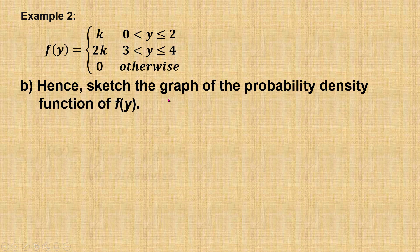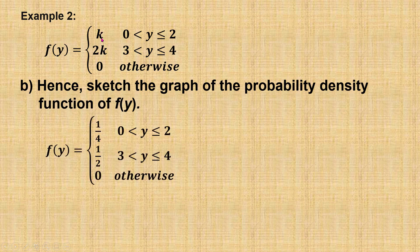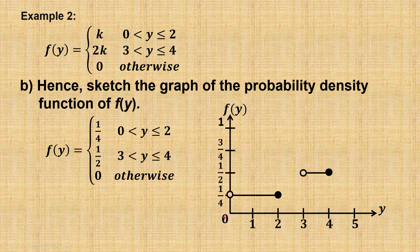To sketch the graph, I substitute the value of k just found. On the x-axis is the value of y; on the y-axis is the value of f(y). From y = 0 to 2, f(y) = 1/4. When y is between 3 and 4, f(y) = 1/2. This is the curve of the probability density function f(y).